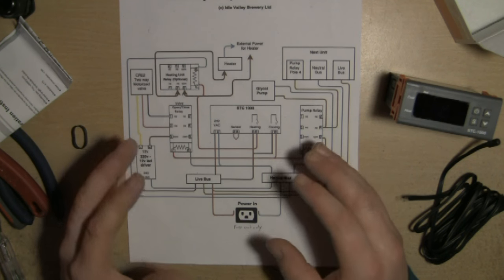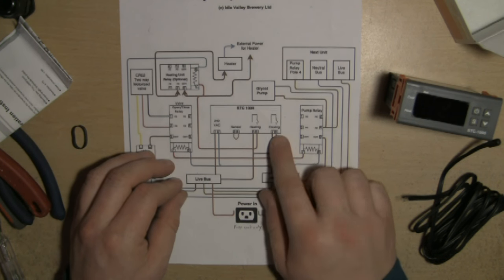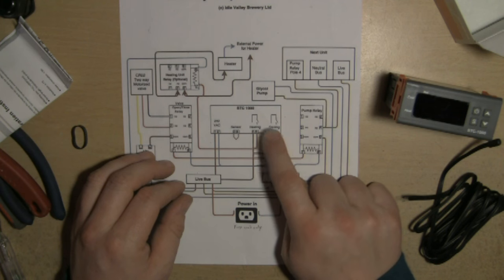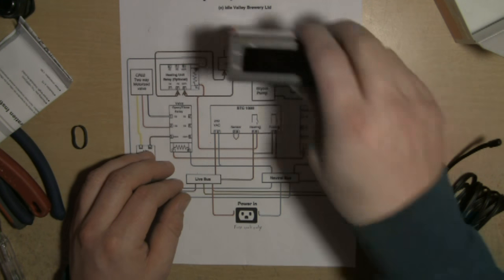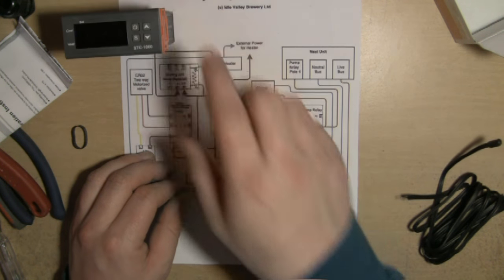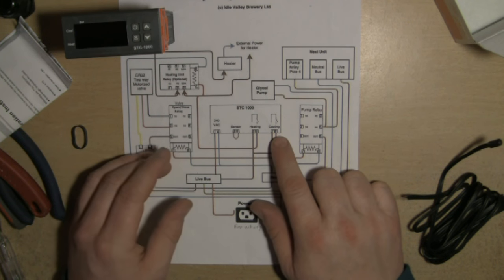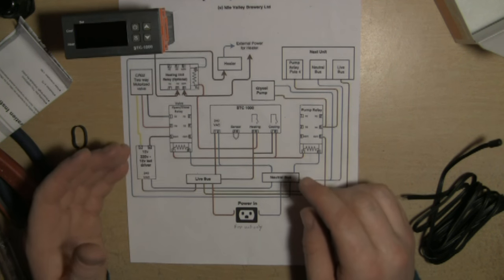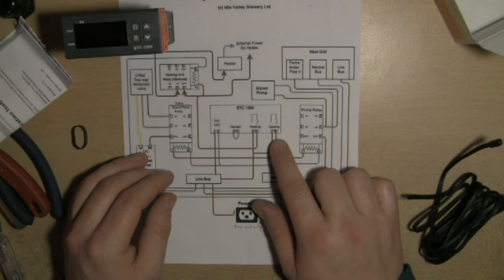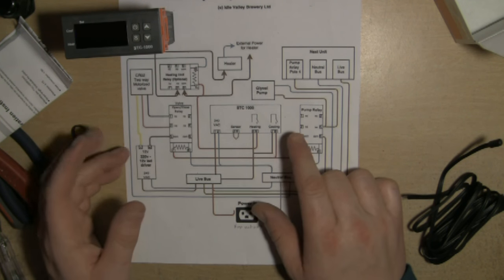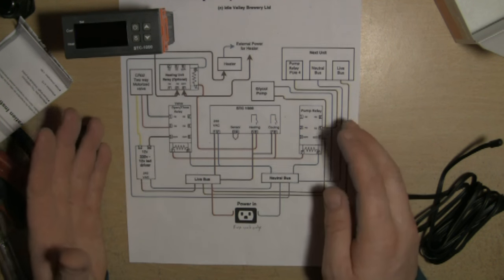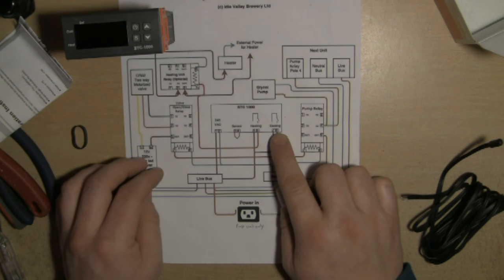Let's say you've set it for 18 degrees Celsius and the temperature starts to climb to 22 degrees. What will happen on this system is the cooling relay will activate.